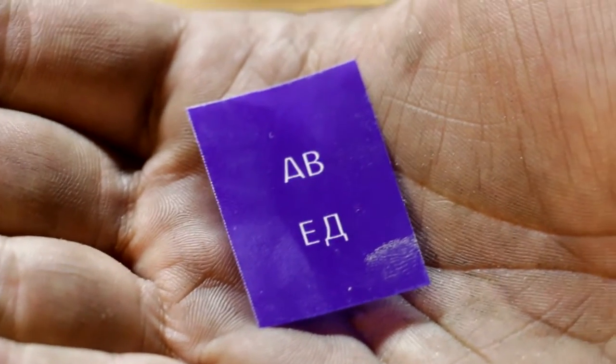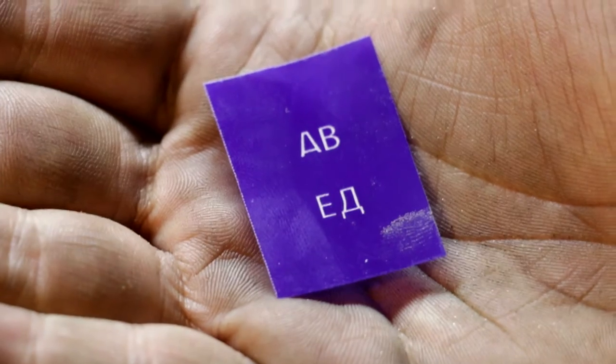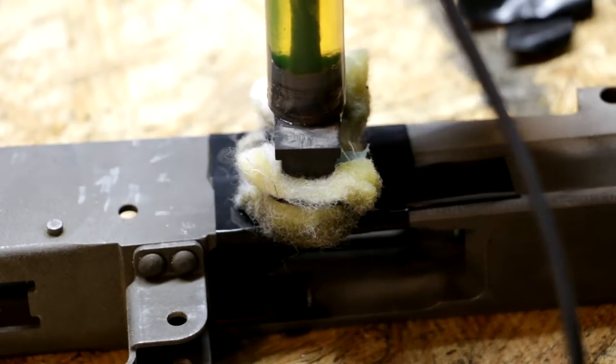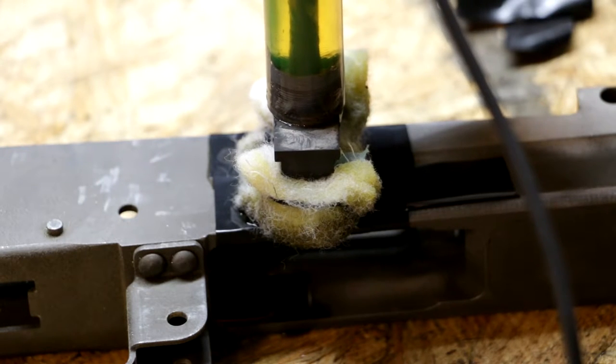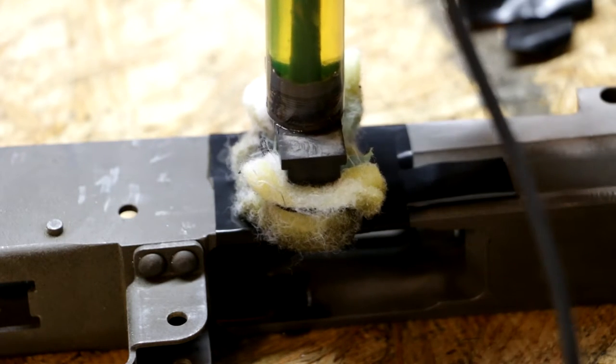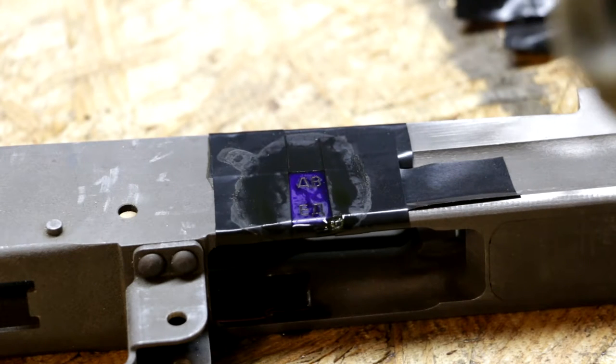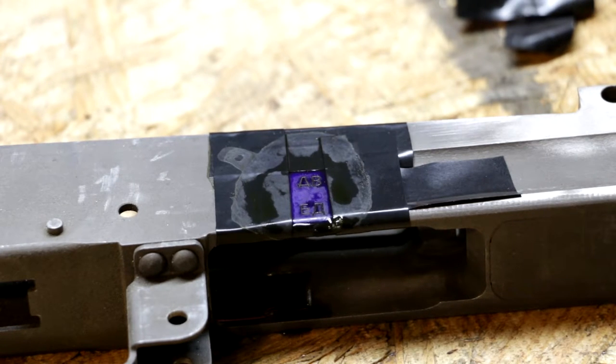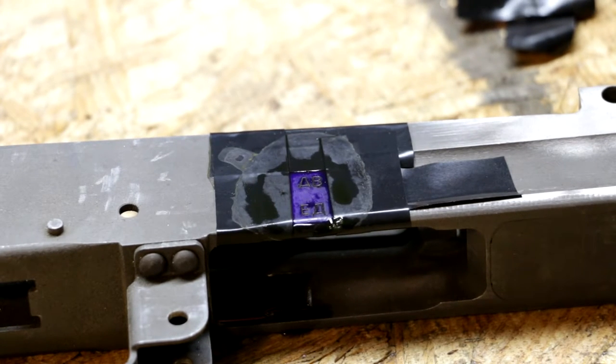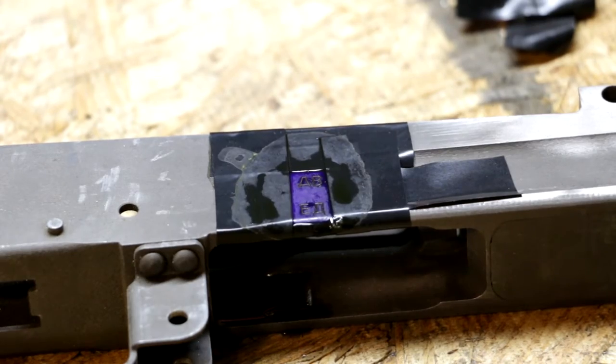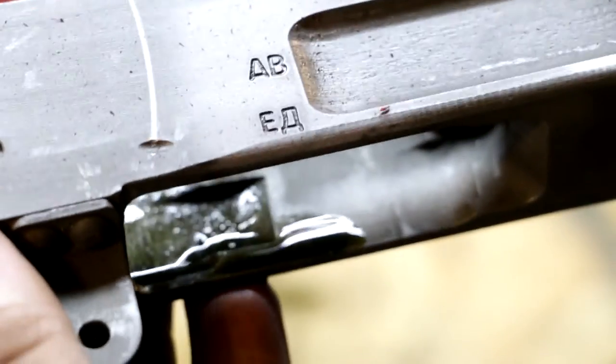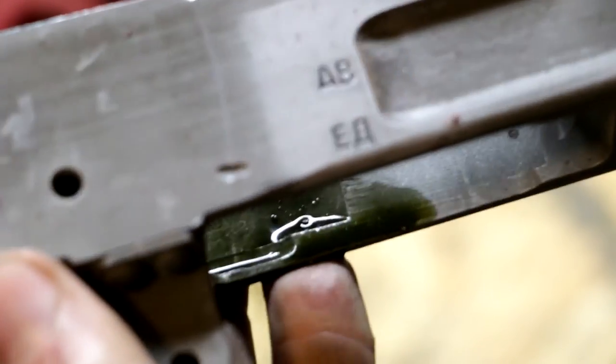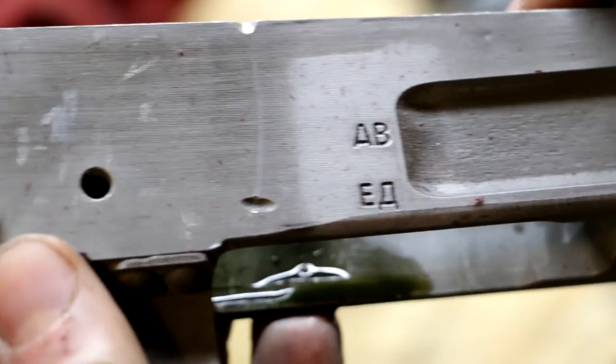All right, and next we're gonna use this other stencil I made with the Bulgarian selector markings. And there we go, we'll take the tape and stencil off and take a look at it. And there you have it, one Bulgarian selector mark that looks really good, really good.